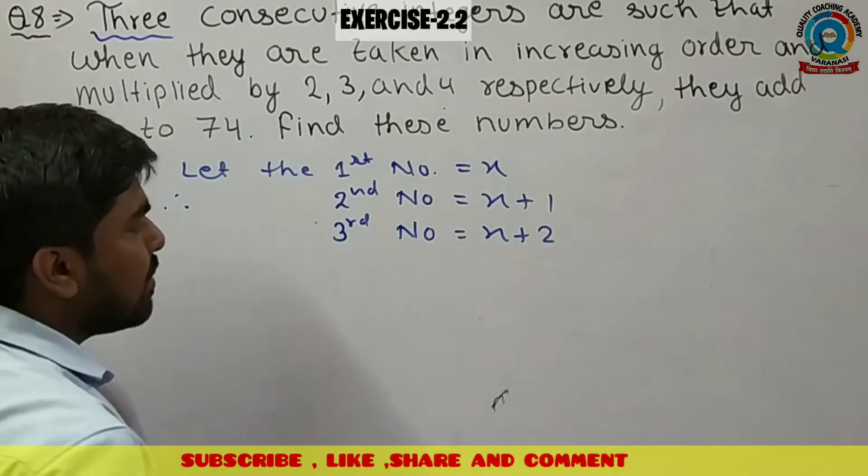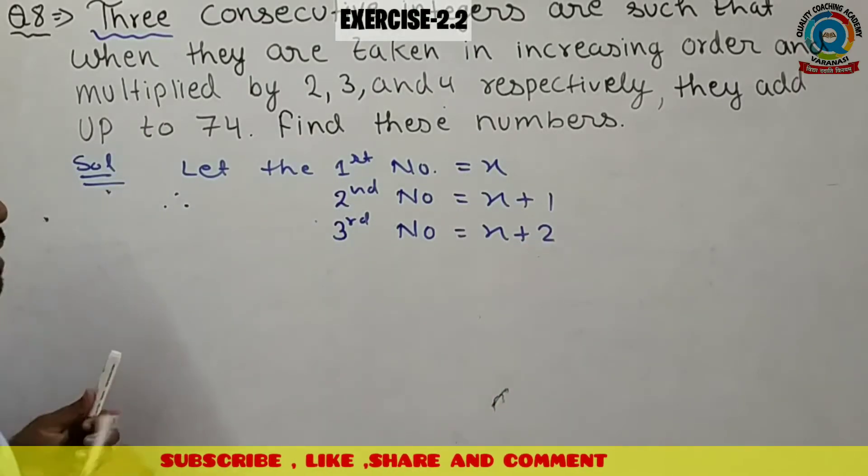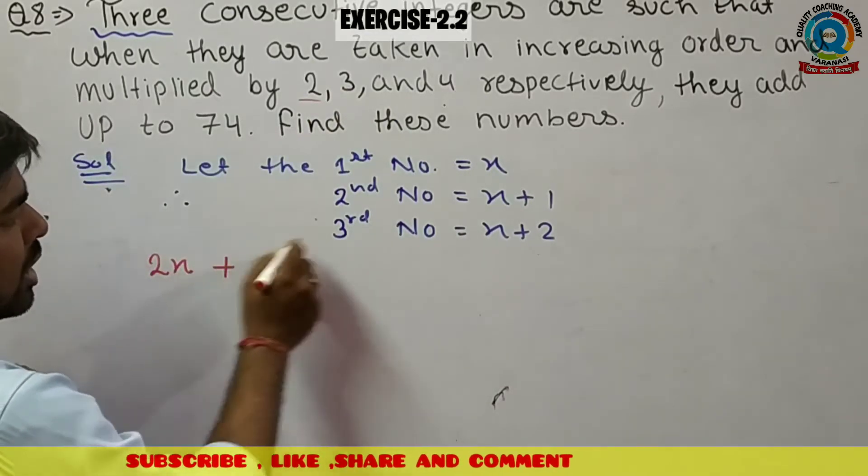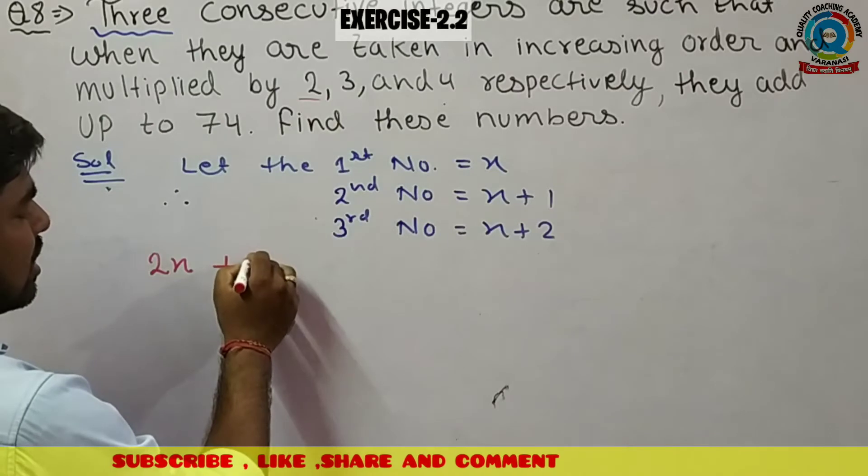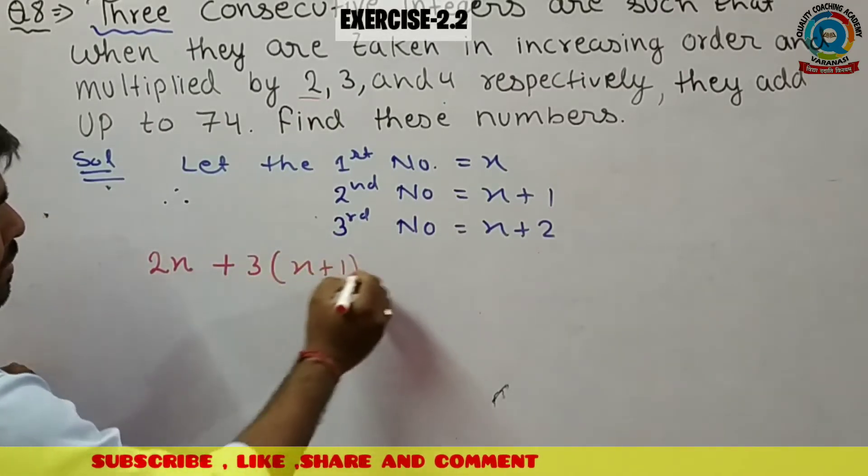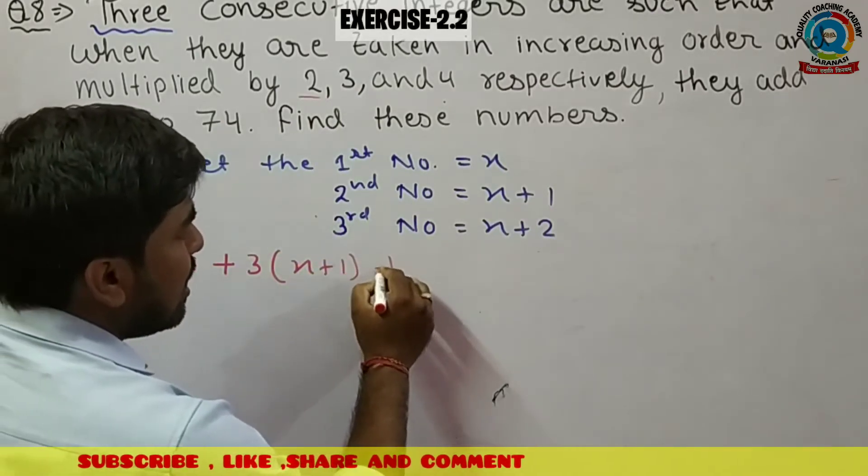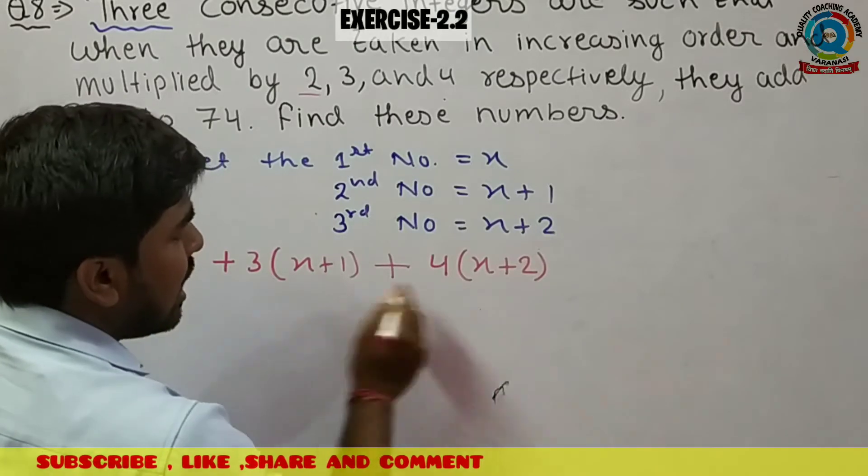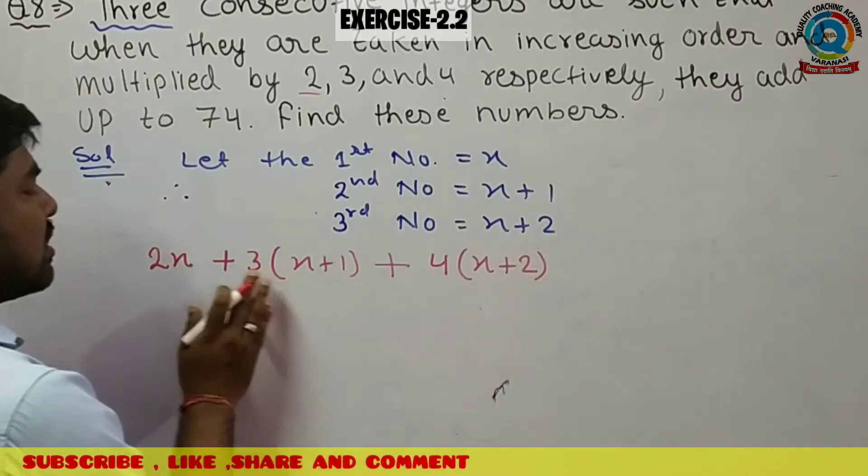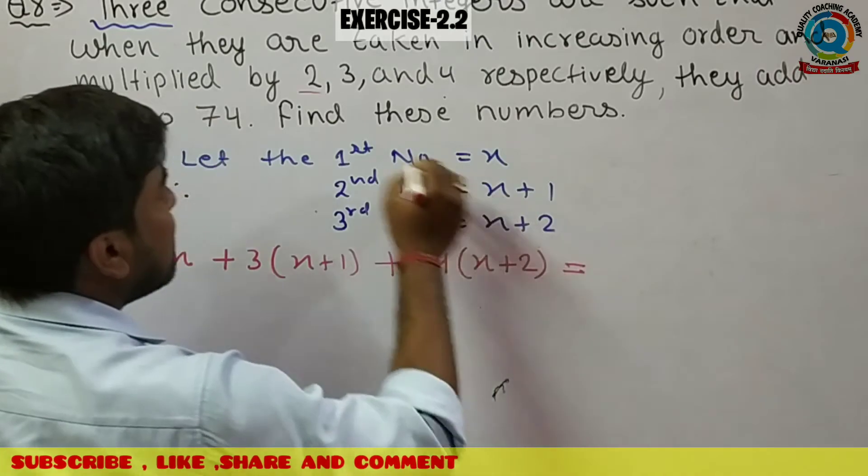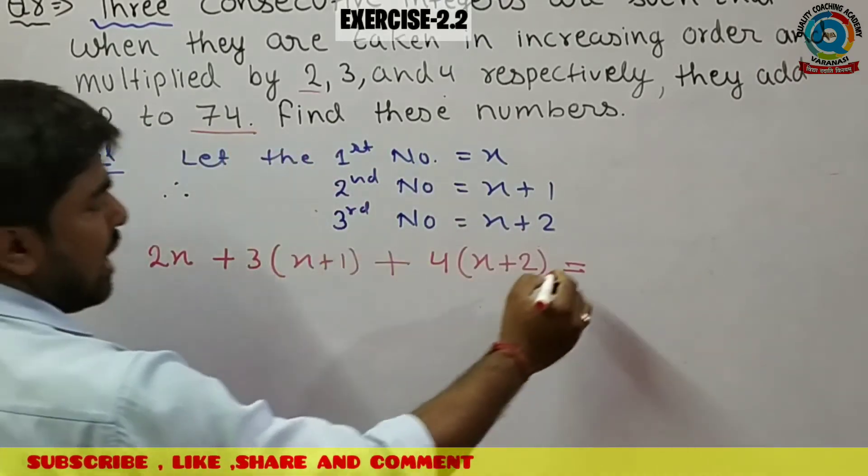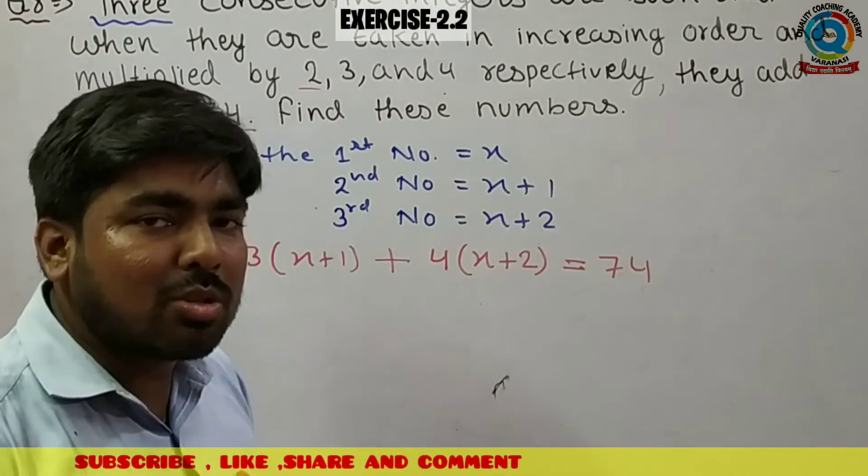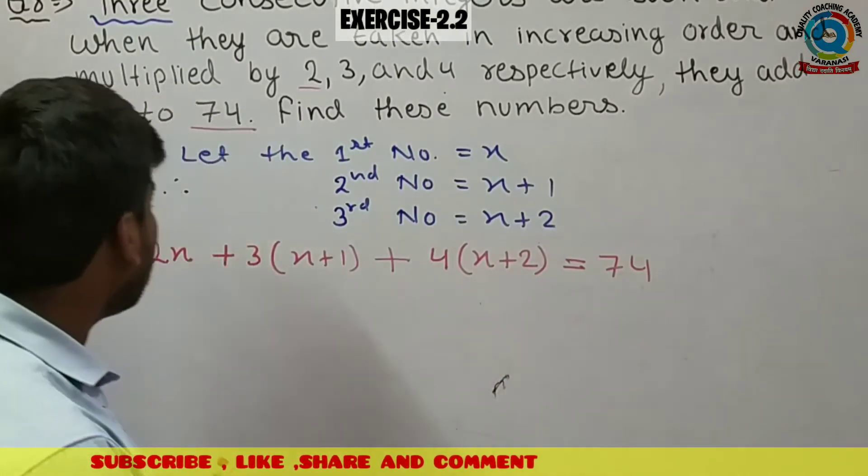Ab mein kya karun ga? Ki pahle number me 2 se multiply karun ga, that is 2x. Dousre number me multiply karun ga 3 se, that is x plus one, or 3 se multiply karun ga. Third number multiply karun ga 4 se, x plus 2 me. Jab isko sum kiya, meinne ye number se multiply karke, tau kitna aya tha? 74 aya tha.